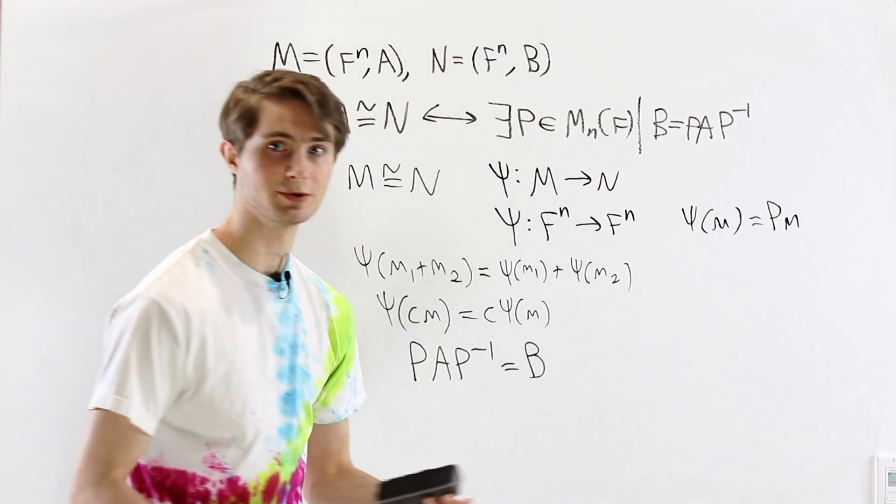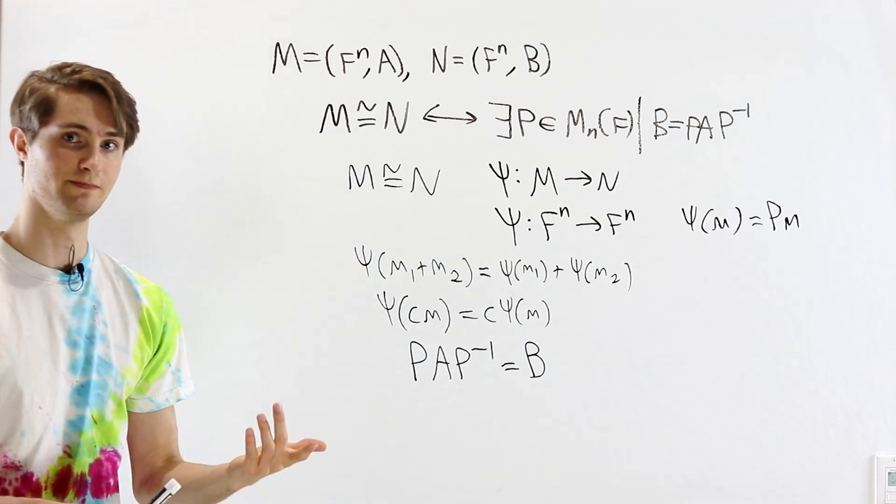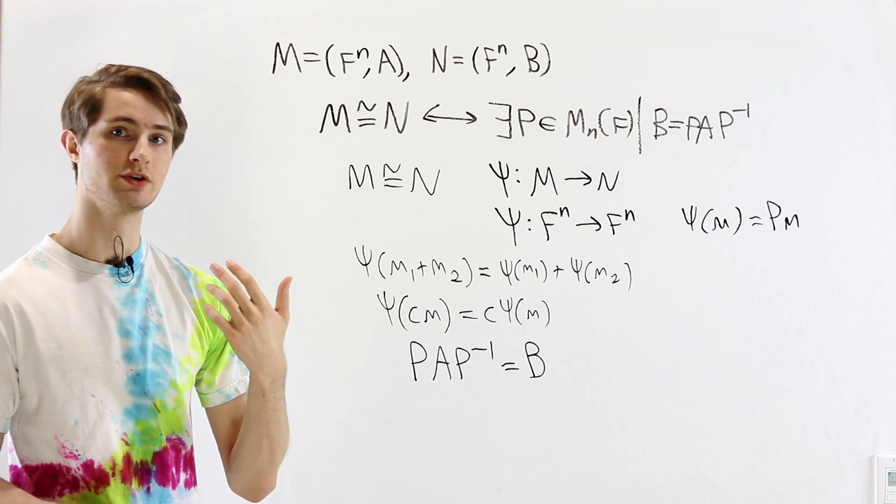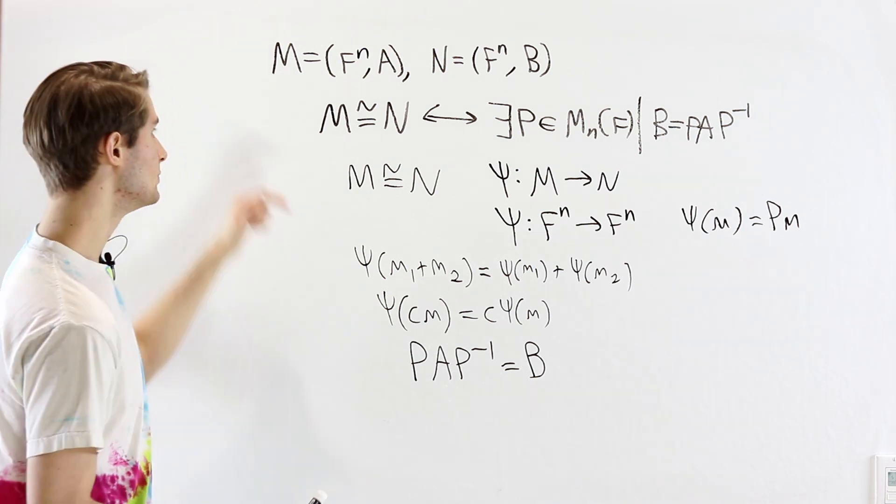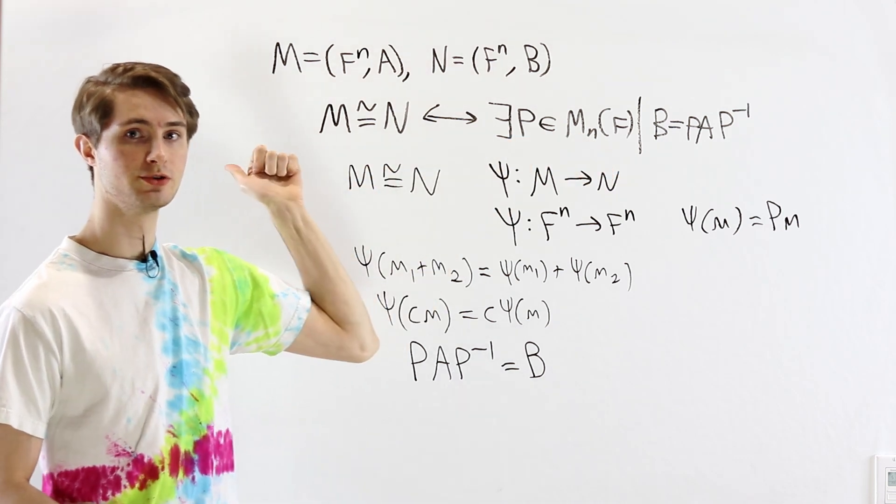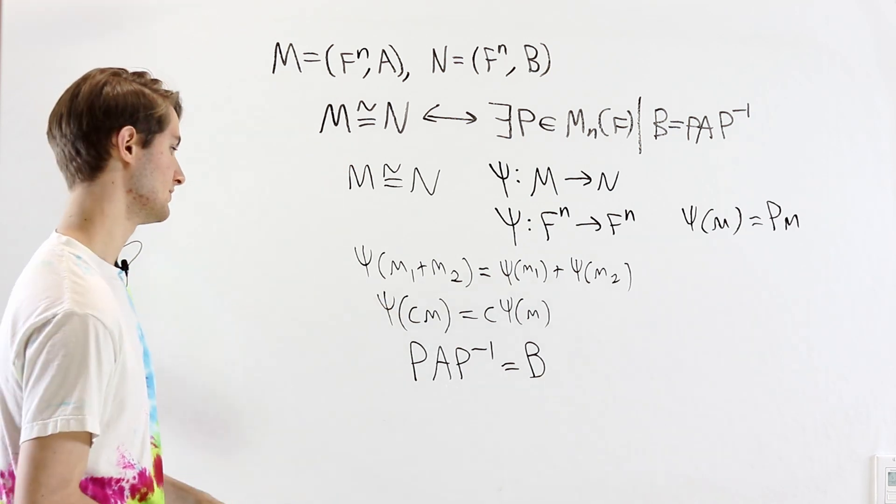And it's invertible, meaning it has to be a bijection for an isomorphism. And this entire proof is basically a series of equivalent statements. So we only proved the statement in this direction, but you could also prove it in the reverse direction by basically following the steps backwards.